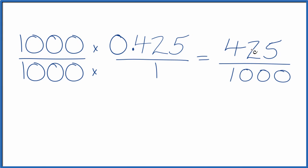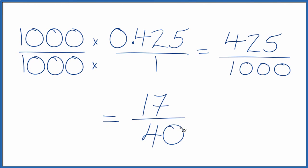So let's give ourselves some room. So 425 divided by 25, that equals 17. And then 1,000 divided by 25, that equals 40. So the decimal 0.425 equals the fraction 17 fortieths. If you divide 17 by 40, or 425 by 1,000, you'll get the decimal 0.425.